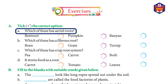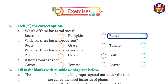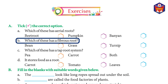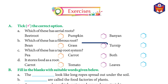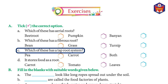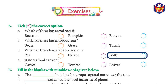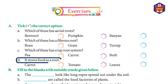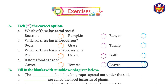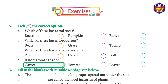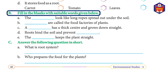Exercise A — tick the correct option. (a) Which of these has aerial roots? Beetroot, pumpkin, or banyan. Answer: banyan. (b) Which of these has fibrous roots? Bean, grass, or turnip. Answer: grass. (c) Which of these has a taproot system? Pea, carrot, or both. Answer: both. (d) Which stores food as a root? Carrot, tomato, or leaves. Answer: carrot.